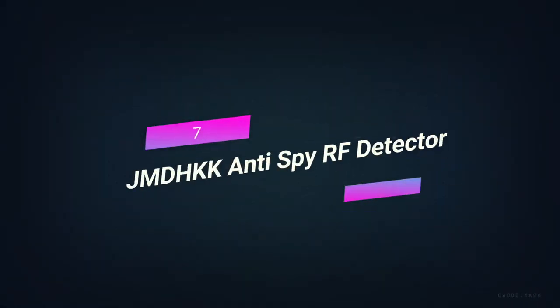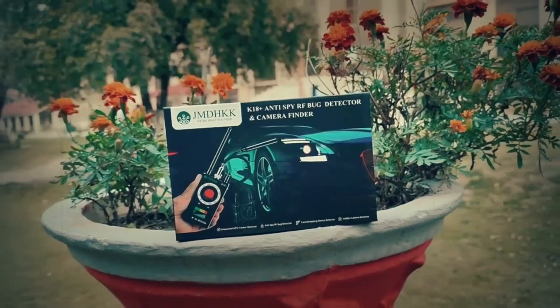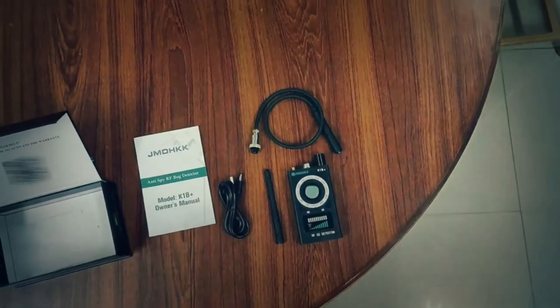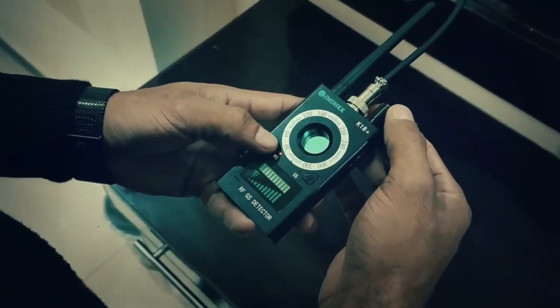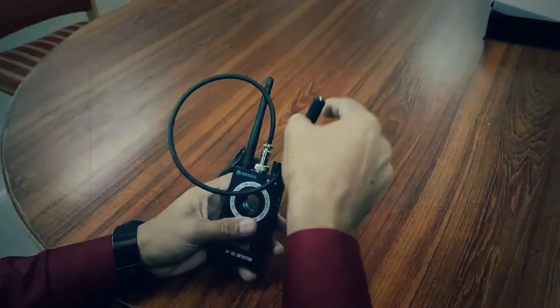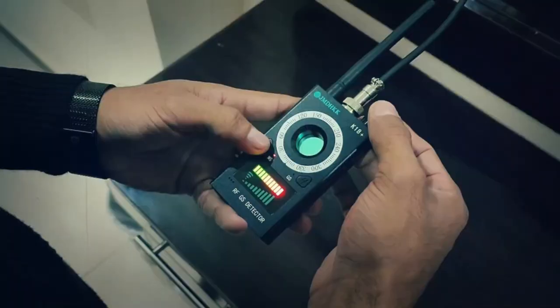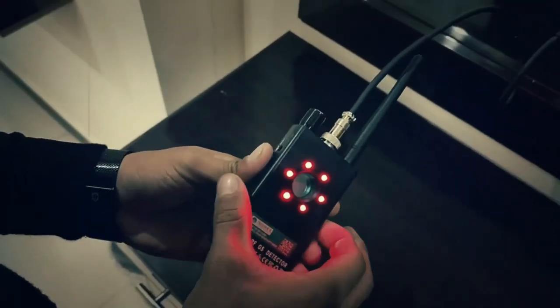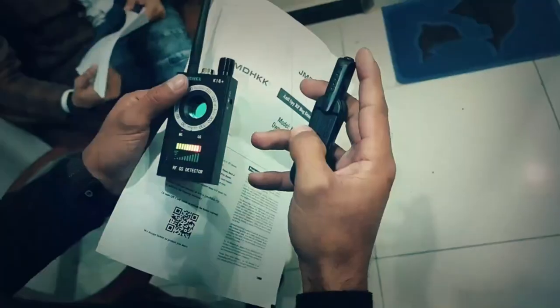Number 7, JMD-HKK Anti-Spy RF Detector. Even if you don't think you'll be in danger, you should always carry a JMD-HKK Anti-Spy RF Detector. This will let you know if someone else has set up surveillance equipment in the area. Be careful and don't put yourself in danger for no reason. Features include LED laser technology that can find any wired or wireless devices that are hidden, as well as magnetic fields and radio waves.